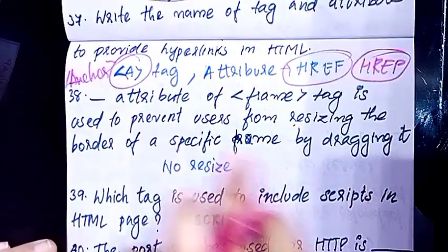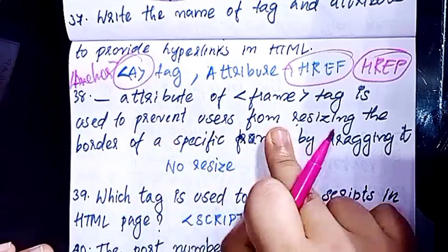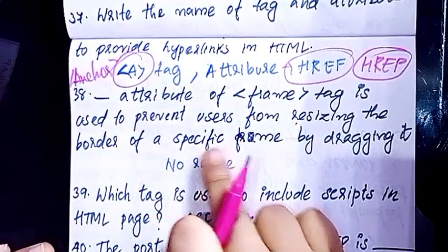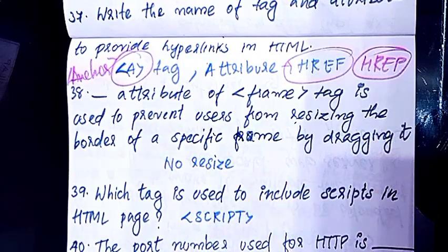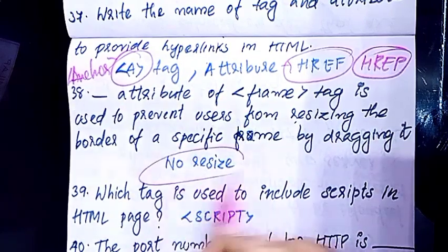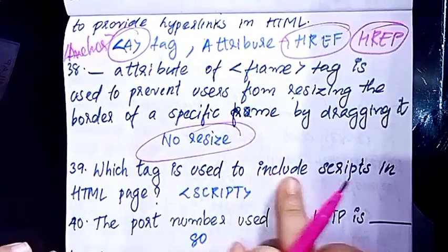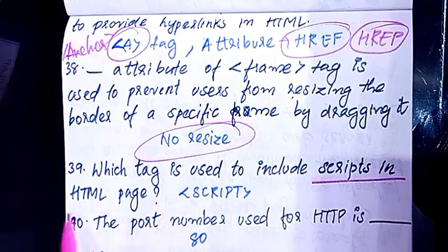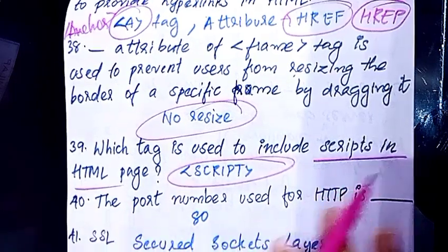The dash attribute of the frame tag is used to prevent users from resizing the border of a specific frame by dragging it — resize is prevented here. The tag used to include a script in HTML is the script tag.